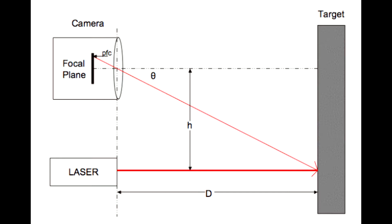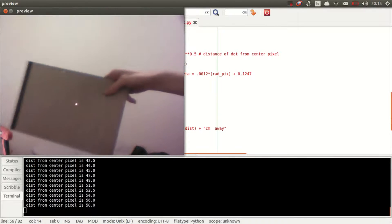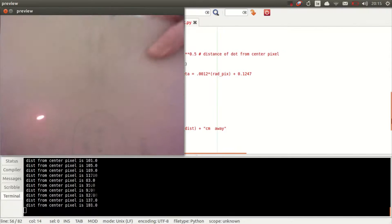And then the next thing is pfc. So pfc is the number of pixels from the center of the focal plane. Take a look at this clip - I made a really simple Python script that would grab frames from the webcam, looks for the red dot, and tells me how many pixels it is away from the very center pixel. That's all pfc is - it's how many pixels has my red dot moved away from the center.